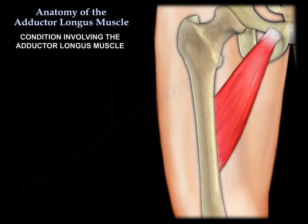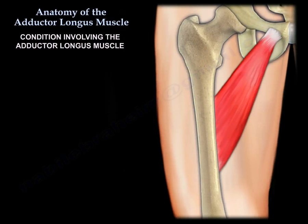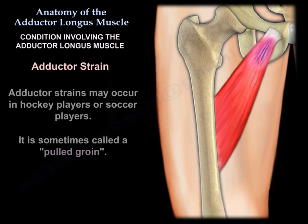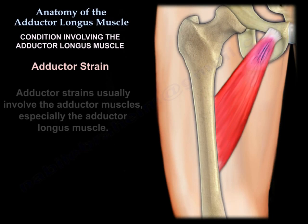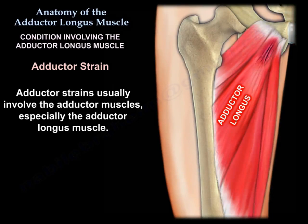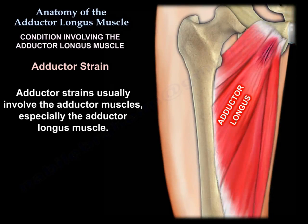There is an entity that involves the adductor longus, and this entity is called the adductor strain. It occurs in hockey players and soccer players, sometimes called a pulled groin. Adductor strain usually involves the adductor muscles, especially the adductor longus muscle.